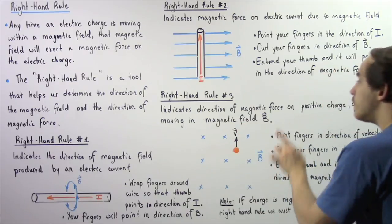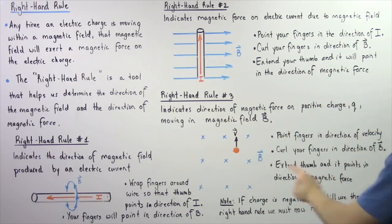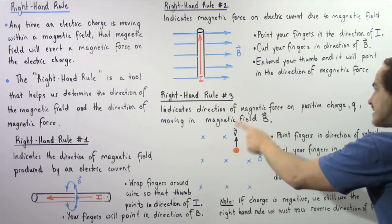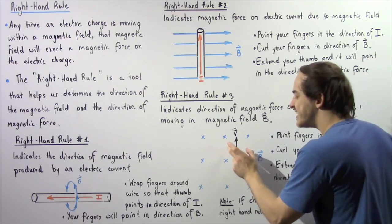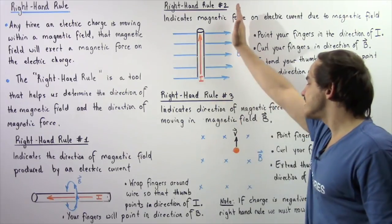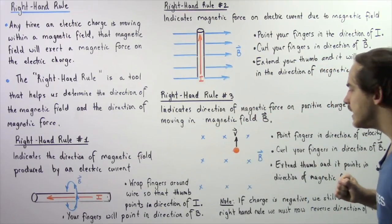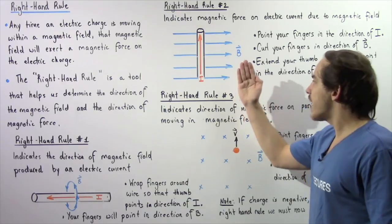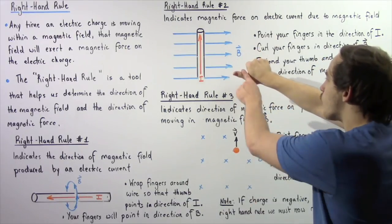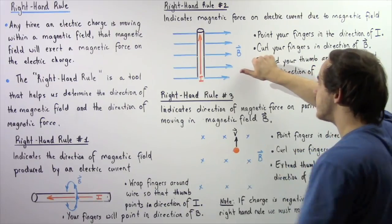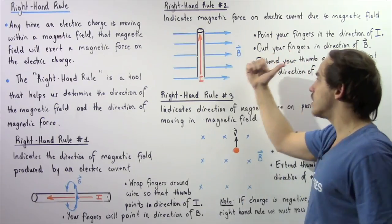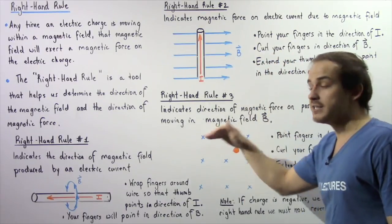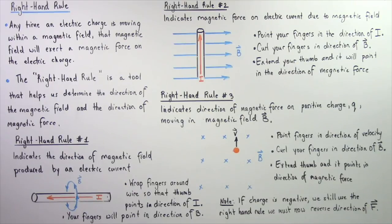This rule works for positive charges. If the charge is negative, we still apply right hand rule number three the same way, but at the end we reverse the direction of our force. So if this was a negative charge traveling in the same direction in the same magnetic field, we apply the rule and find the force initially points in the negative x-direction, but because the charge is negative, we reverse it — so the force would act in the positive direction along the x-axis.